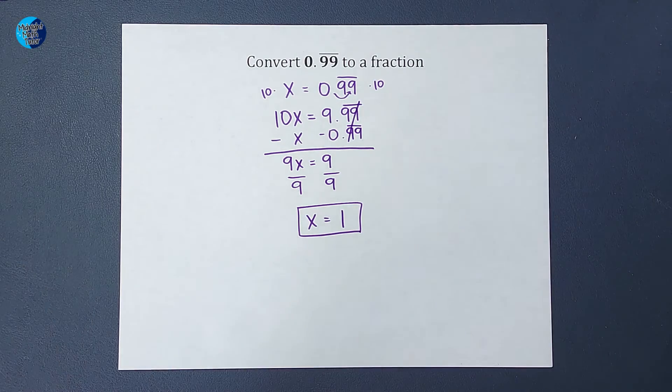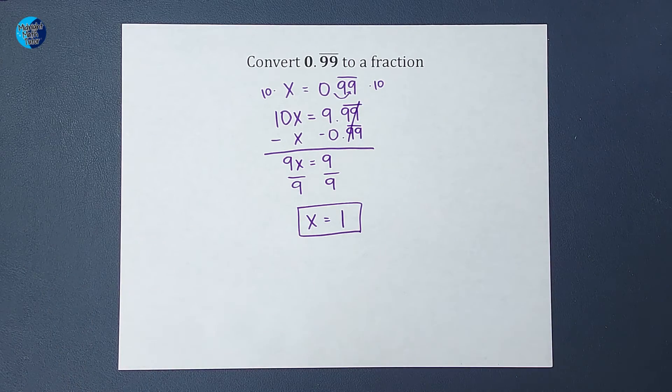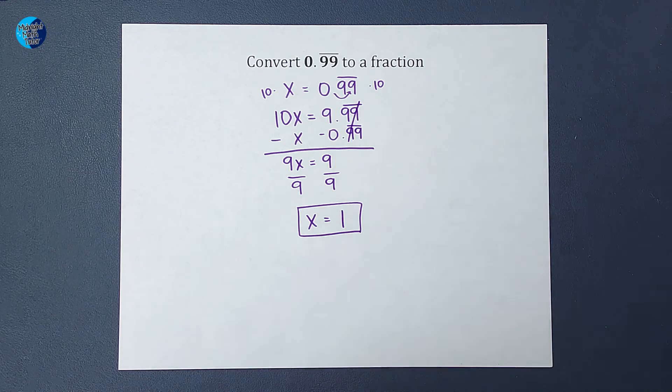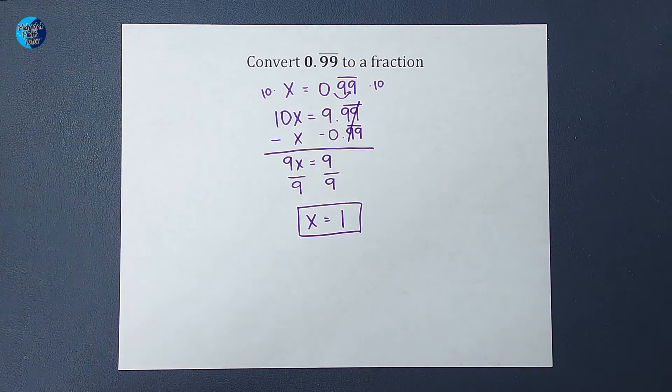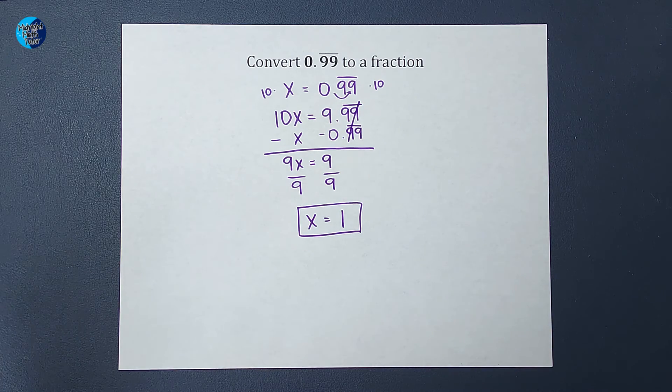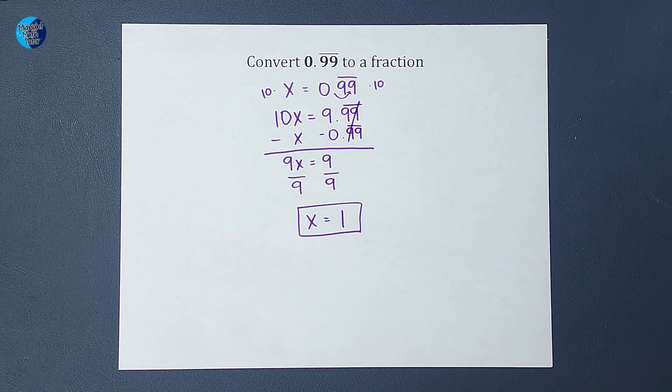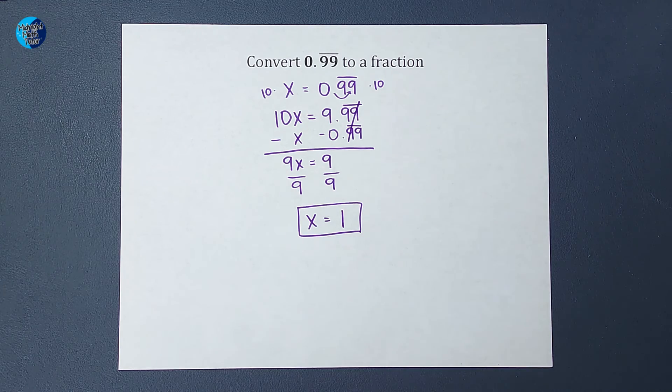So we just proved mathematically that 0.9 repeating is equal to 1. If that makes you mad, I hear you. I'm ready for the comments if they come. But there was the mathematical proof that 0.9 repeating is equal to 1.